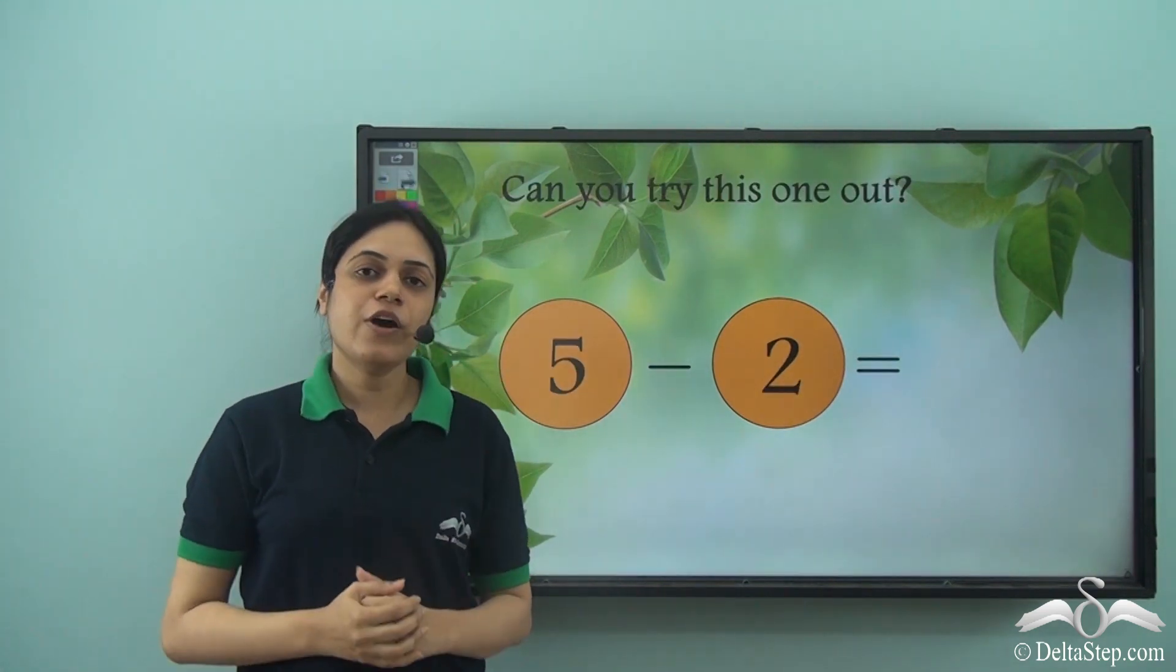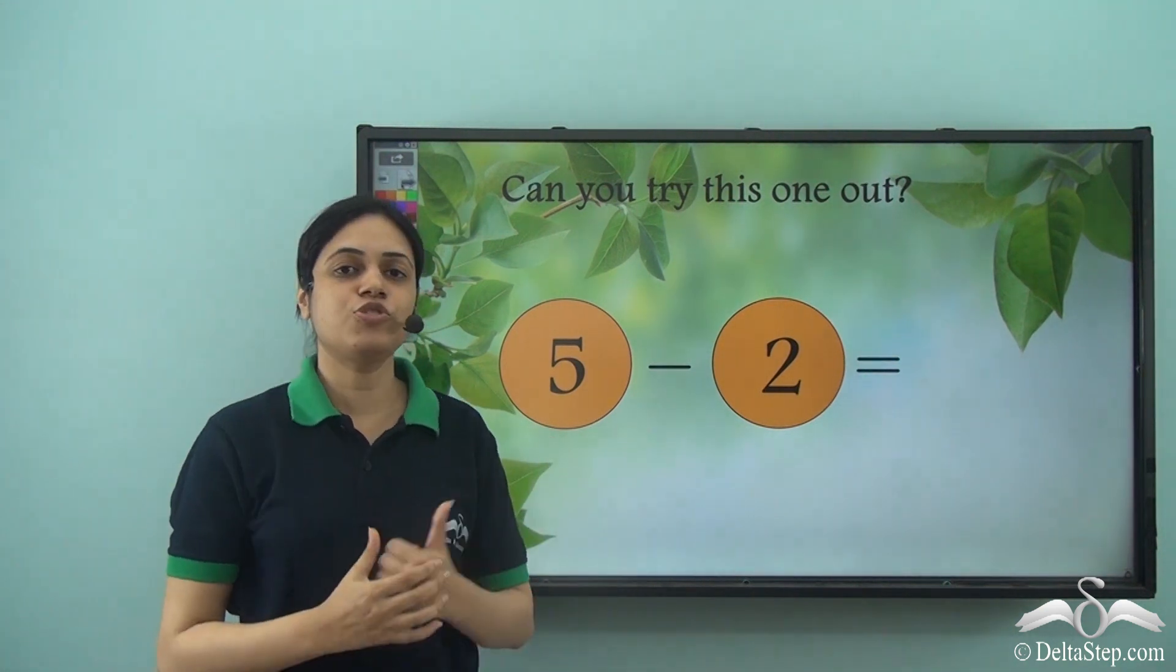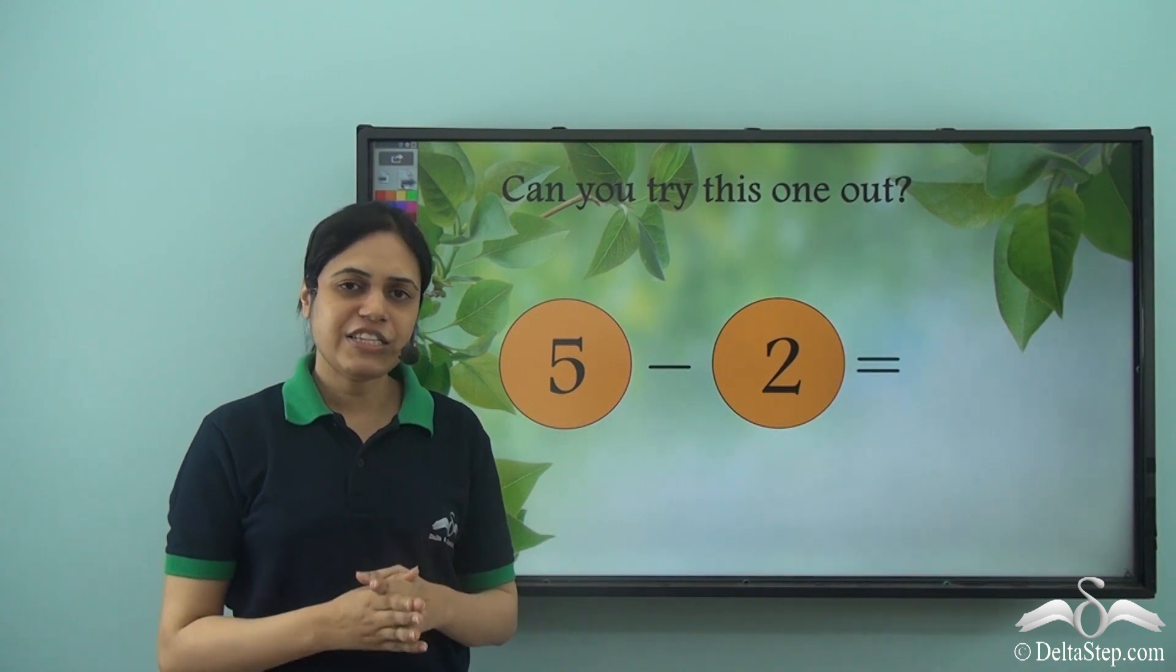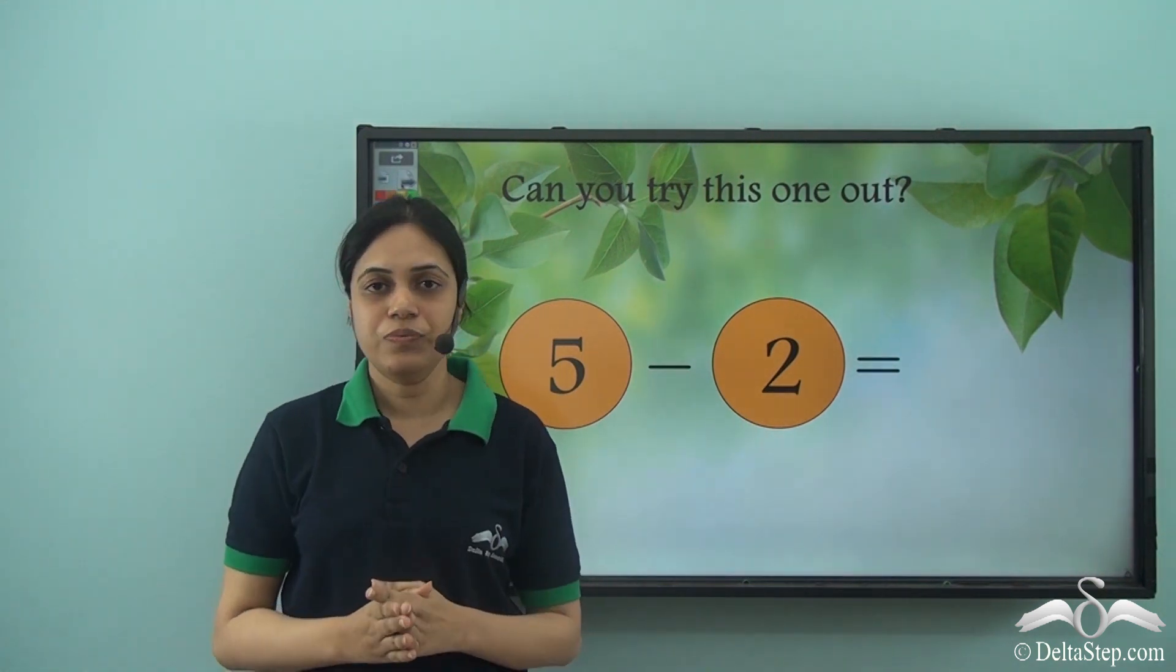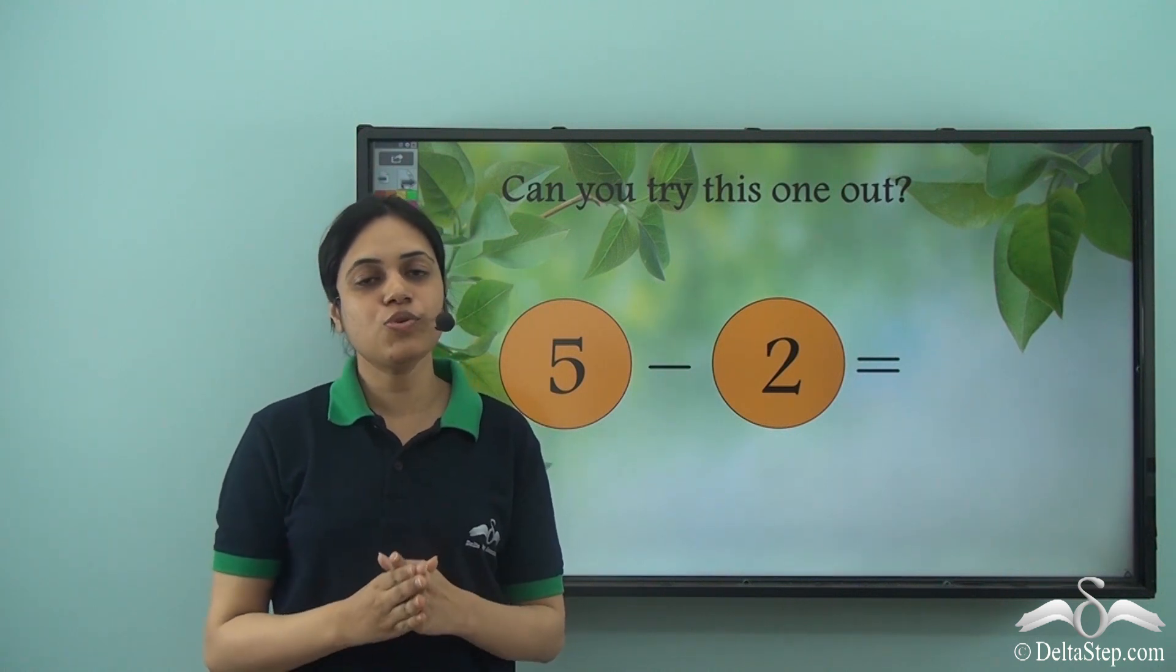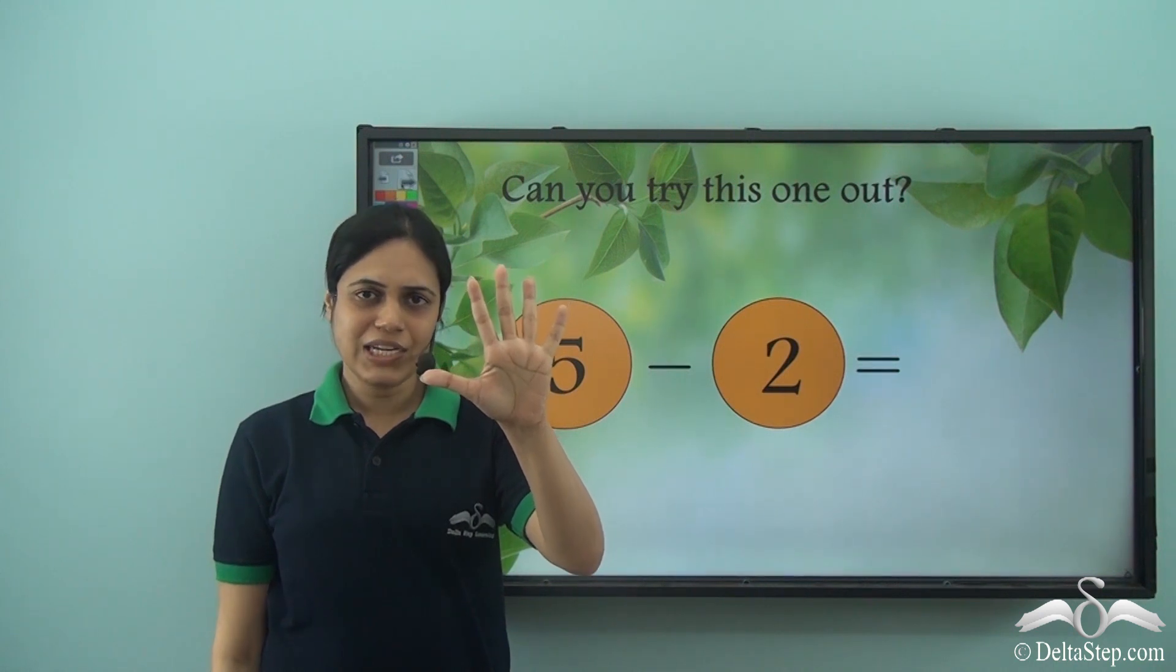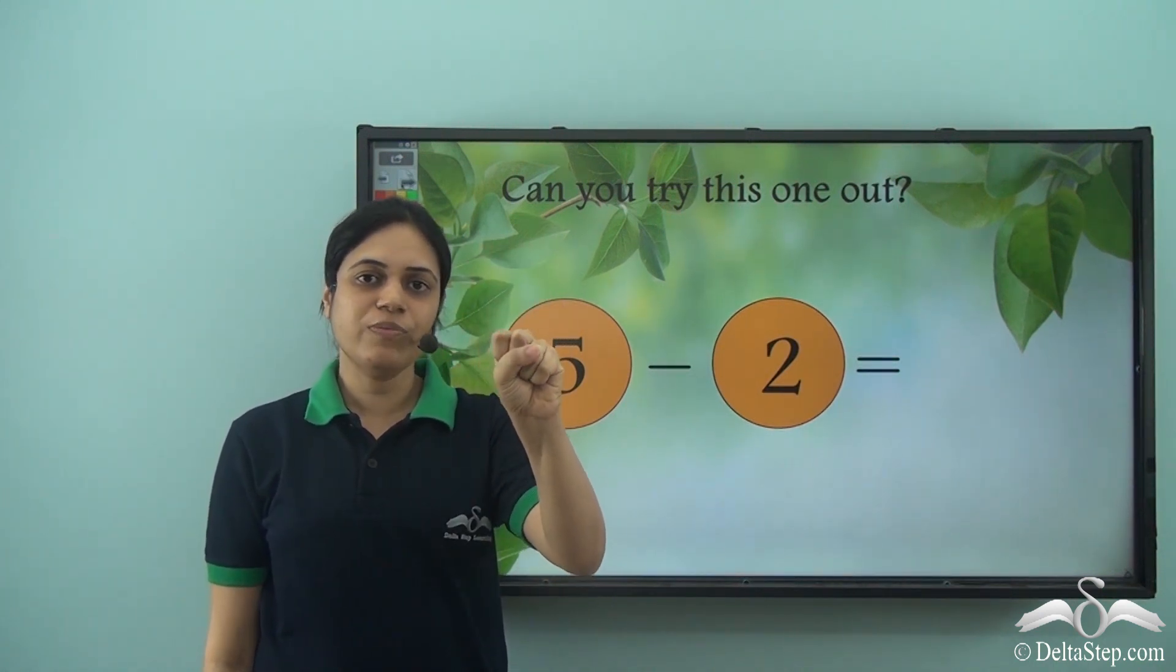So can you try out this one on your own? Can you find five minus two using your fingers? Let's do it together. So five minus two. Firstly, I need to open five fingers. I know this is five, right? One hand has five fingers. Let's try and do it from the beginning.